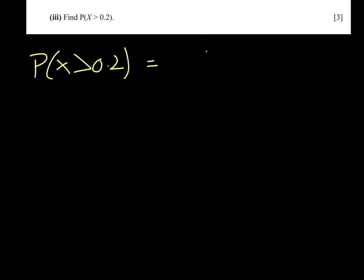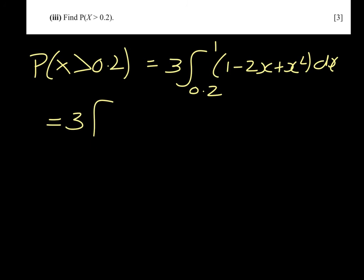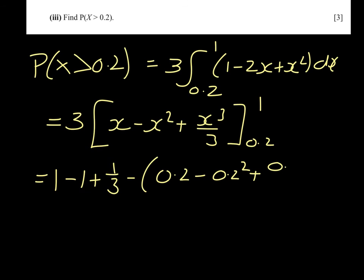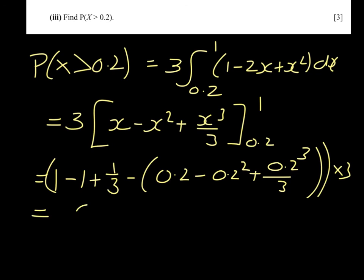The probability that x is greater than 0.2 is the integral from 0.2 to 1 of 3 times (1 minus x) all squared. Evaluating gives 1 minus 1 plus 1 third, take away (0.2 minus 0.2 squared plus 0.2 cubed over 3), all multiplied by 3, which gives 0.512 to 3 significant figures.